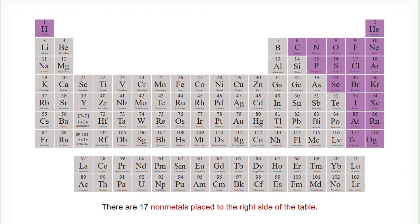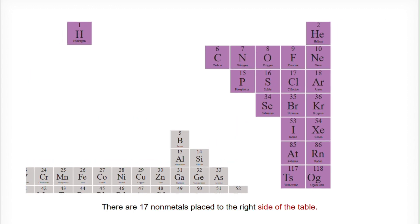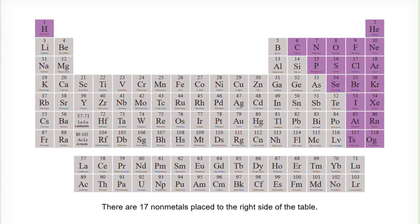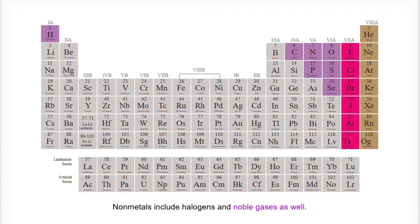There are 17 non-metals placed to the right side of the table. Non-metals include halogens and noble gases as well.